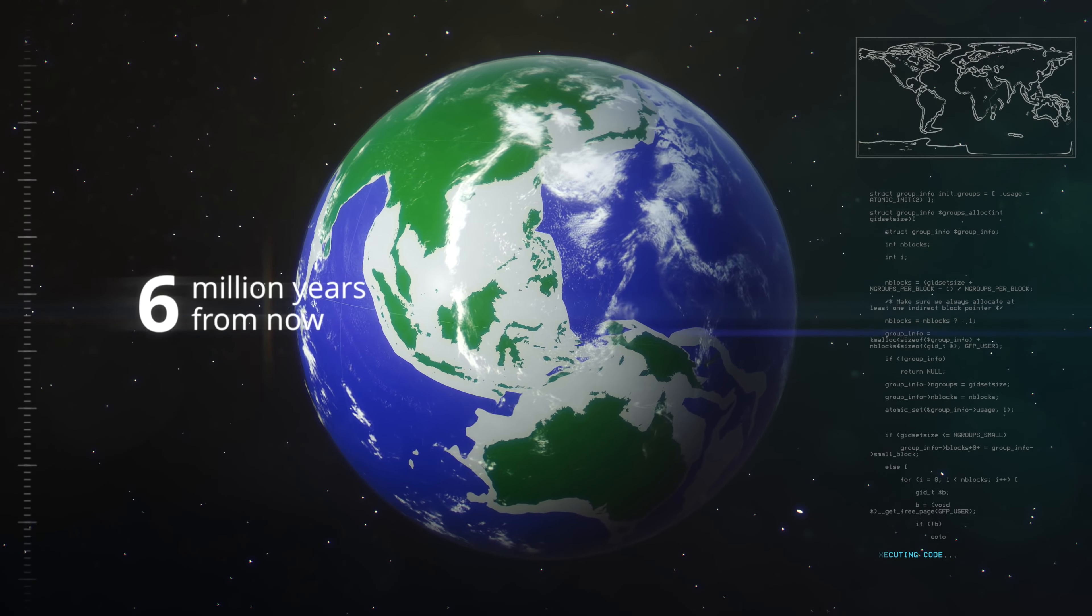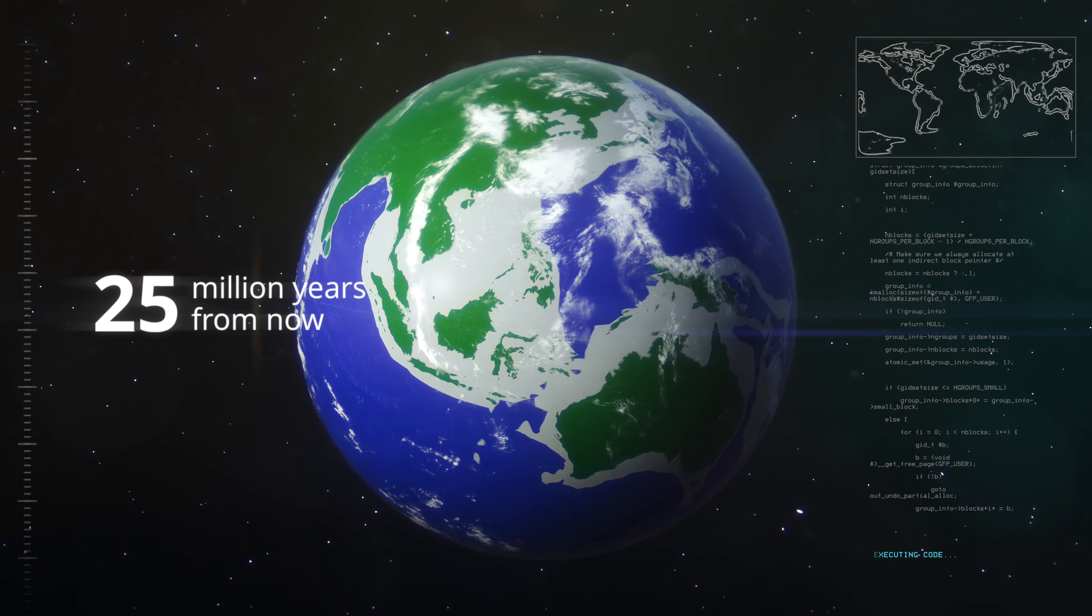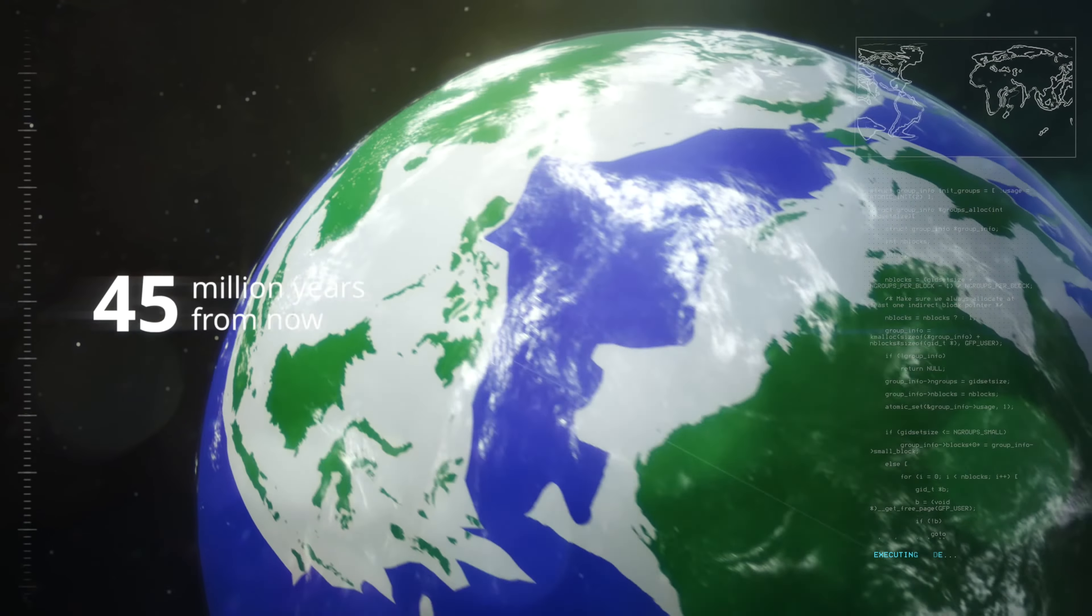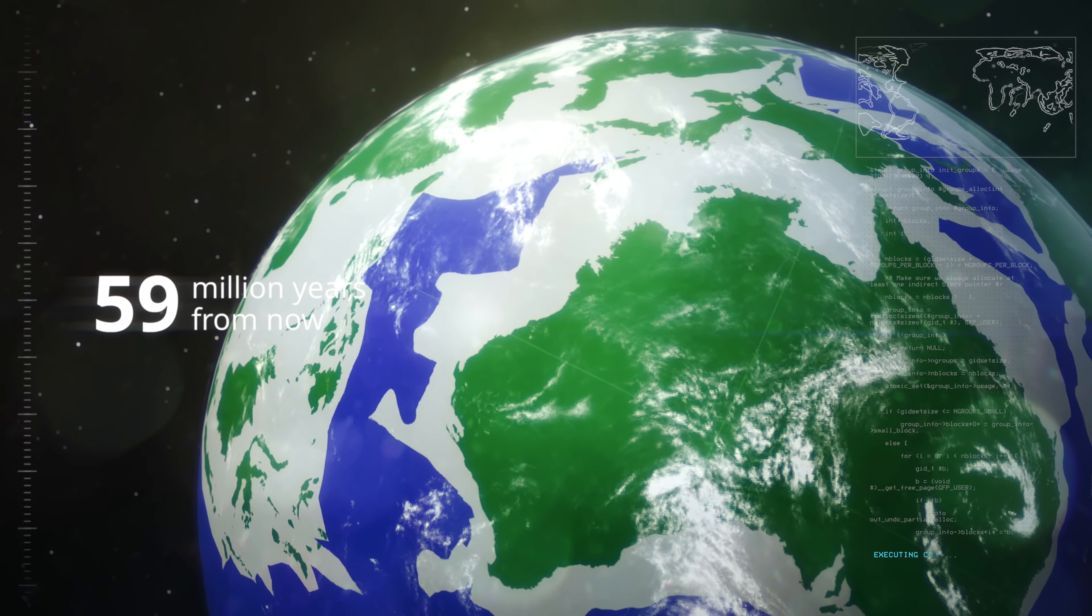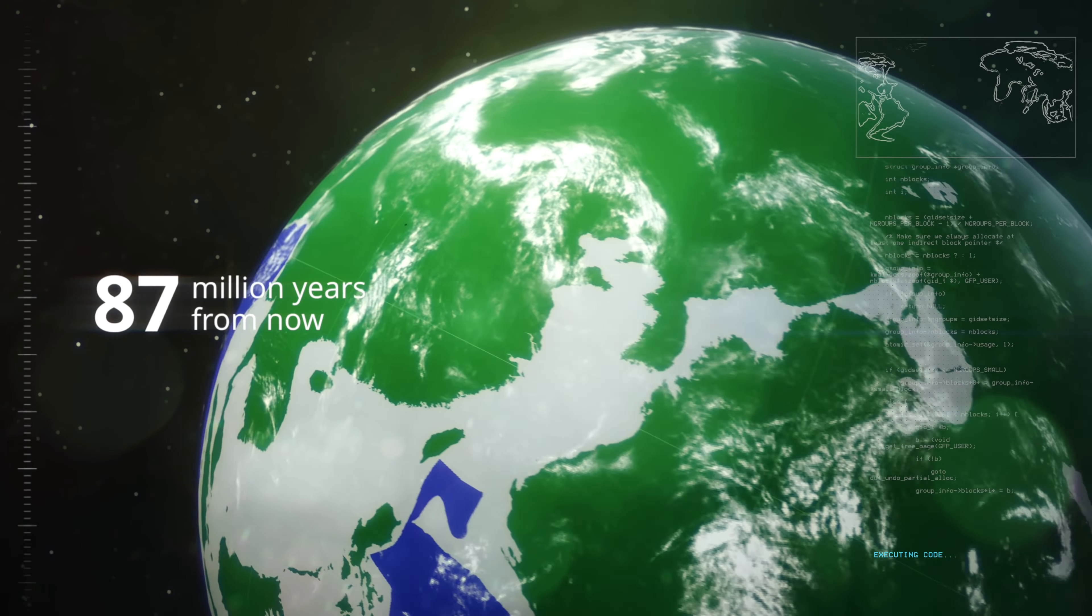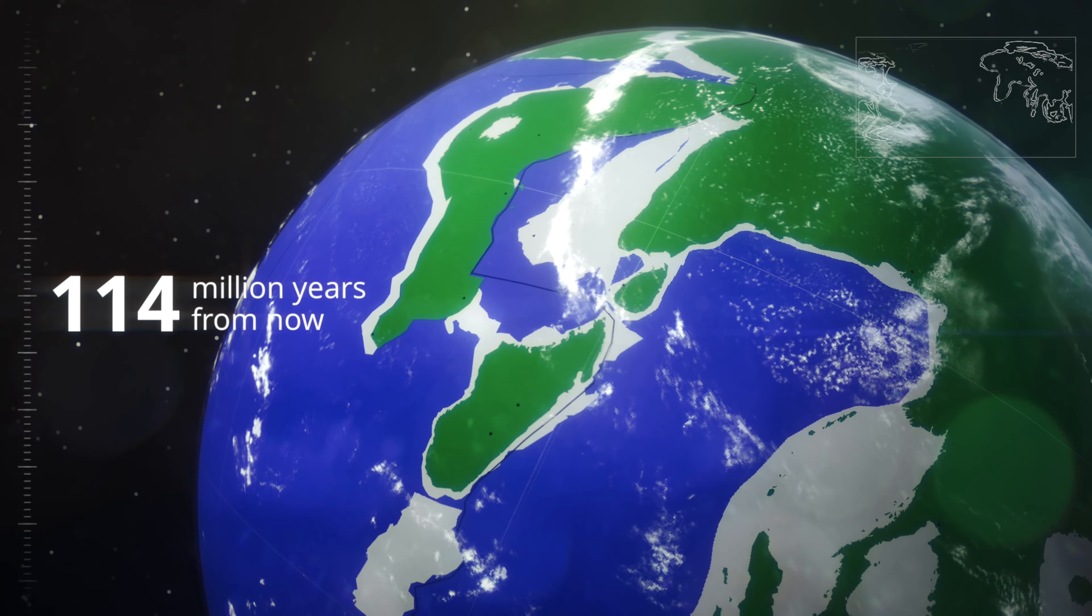Using data from present mountain belts, the Utrecht geologists have now deduced some rules of mountain building. Using these rules and a model of future continental movement, they can predict how subduction will transform the present-day geography into mountain belts in a future that lies immeasurably far away.